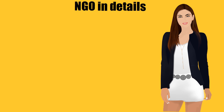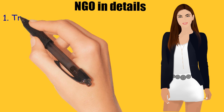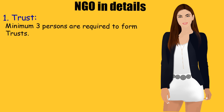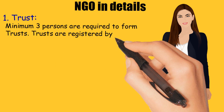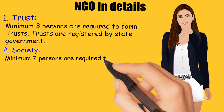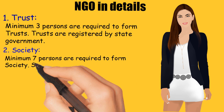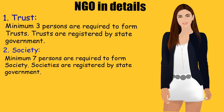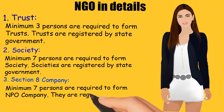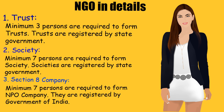NGO in detail: 1. Trusts — minimum 3 persons are required to form a Trust. Trusts are registered by the State Government. 2. Society — minimum 7 persons are required to form a Society. Societies are registered by the State Government. 3. Section 8 Company — minimum 7 persons are required to form an NPO Company. They are registered by the Government of India.